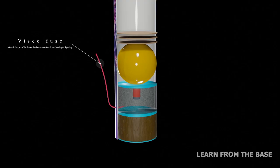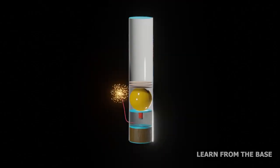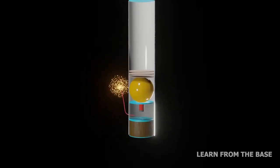This is the visco fuse that initiates the function of burning. It is used to create a delay of time in the firing.